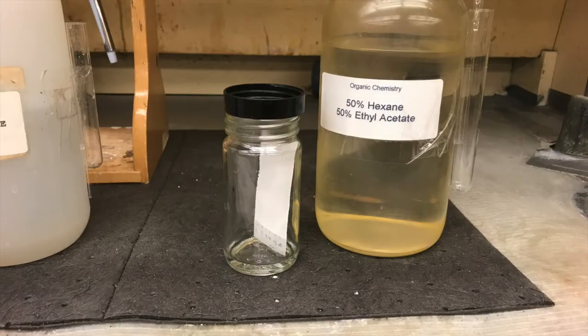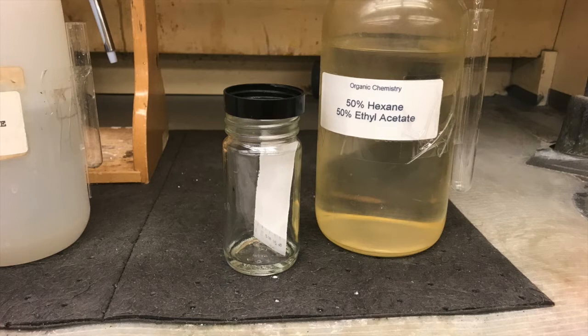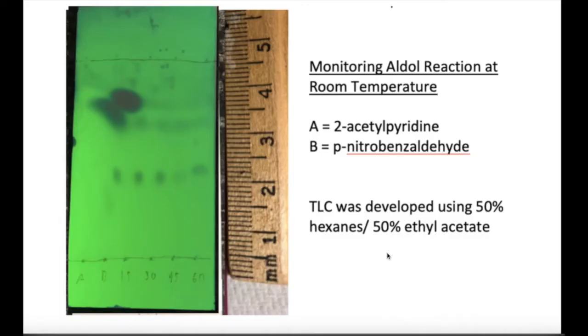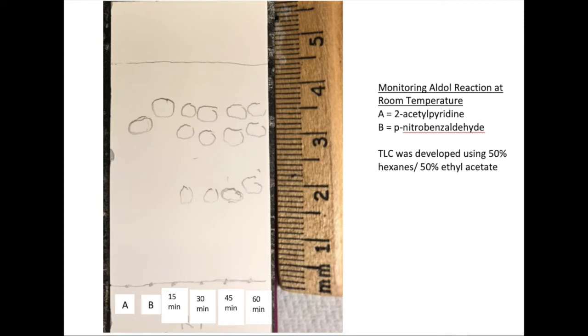The TLC analysis for this was done exactly the same as it was for the last reaction. Every 15 minutes we took a little bit of the reaction mixture and spotted it on the TLC plate. Here's what that TLC plate looked like. Unfortunately, it looks like some of the spots started to merge. Here's our 2-acetylpyridine, which should be a little bit more to the left here. And then our p-nitrobenzaldehyde, this big spot at the top, should be a little more to the left as well. And here's our 15 minute, 30 minute, 45 minute, and then 60 minute lanes. To make it easier, we also just circle the spots on the next slide. So you guys can use this to calculate any RF values. That way there's less confusion.